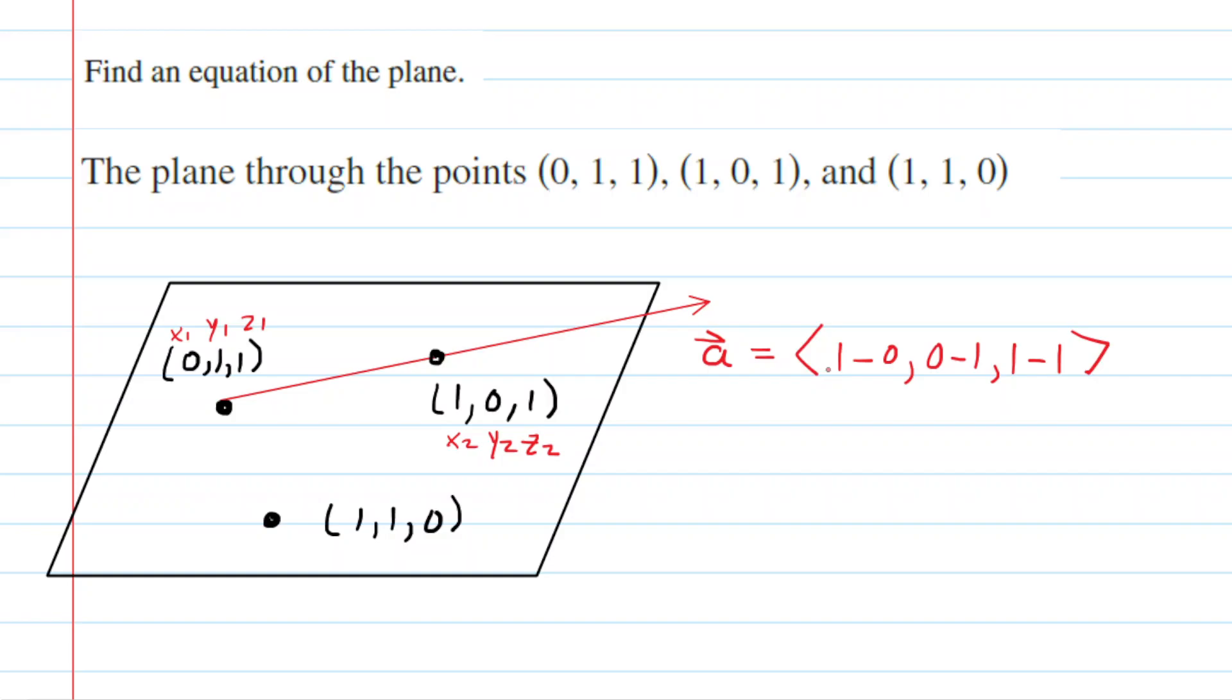So again, we subtracted the second coordinates by the first set of coordinates. And when we simplify this, we get a vector representation of vector A. We get 1, negative 1, 0. So that's great.